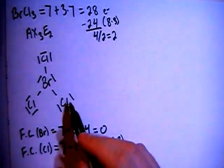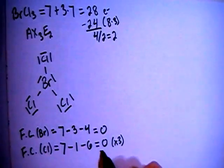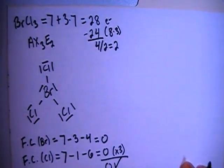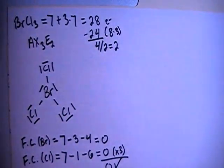Multiply that by 3 because there are 1, 2, 3 of those chlorines. Add all that up, it gives you a 0 overall formal charge, which is what we need because this is a non-charged compound. All right?